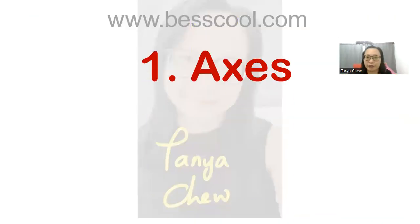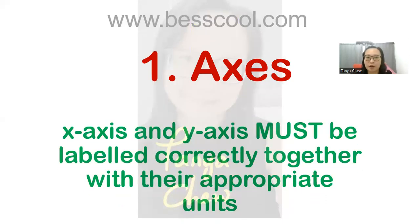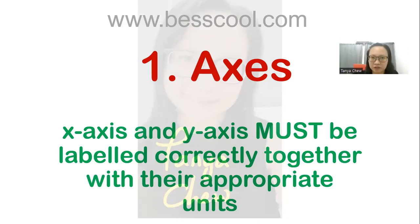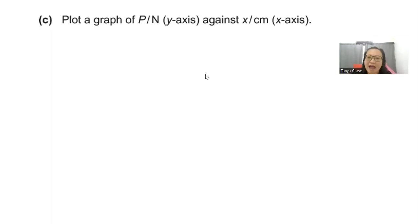Tip number one is related to axes — your X and Y axes. Please bear in mind that all your X and Y axes must be labeled correctly together with their appropriate units. Why appropriate units? Because not all physical quantities have units. As long as they have units, you need to label them. So let us look at one of the past year questions: plot a graph of p slash N, where p is the physical quantity and N is the unit, on the Y axis, against x slash cm on your X axis.